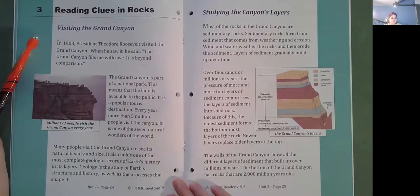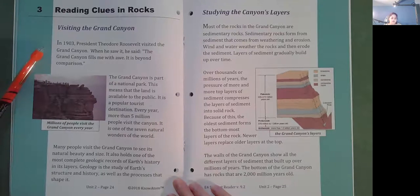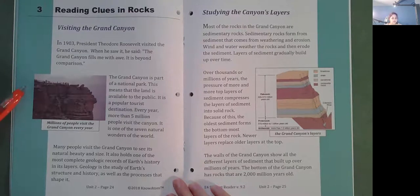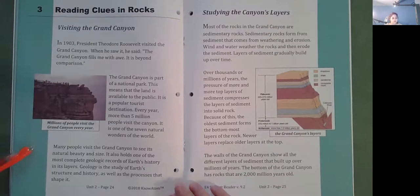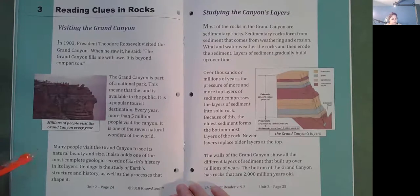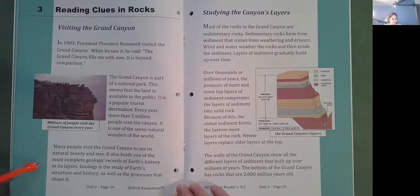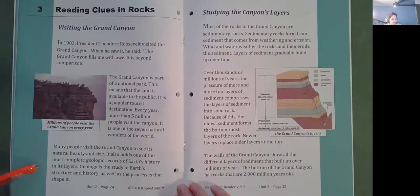Reading clues in rocks. Visiting the Grand Canyon. In 1903, President Theodore Roosevelt visited the Grand Canyon. When he saw it, he said, The Grand Canyon fills me with awe. It is beyond comparison. The Grand Canyon is part of a national park. This means that the land is available to the public. It is a popular tourist destination. Every year, more than five million people visit the canyon. It is one of the seven natural wonders of the world. Many people visit the Grand Canyon to see its natural beauty and size. It also holds one of the most complete geologic records of Earth's history in its layers. Geology is the study of Earth's structure and history, as well as the processes that shape it.